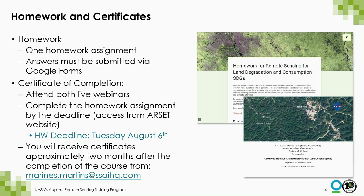We have one homework for this training and the link is now available on the website so you can access the Google form. In order to receive a certificate of completion, you must have attended three of the live webinars and complete the homework two weeks from now, by August 6th. The homework does span the entire training, so be aware of that when answering the questions — there will be questions from sessions one, two, and three and the associated exercises. You will receive your certificate of completion about two months after the end of this course, so please be patient as it does take a while to process all of those.